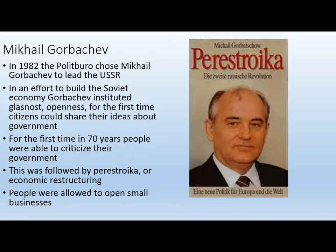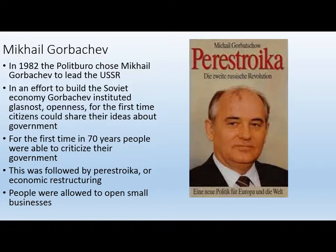Mikhail Gorbachev takes over and institutes a series of policy shifts. The first is glasnost, which means openness — doing the same thing that happened in Czechoslovakia in the 1960s. It allows people some freedom of speech: they can share their ideas and complaints. For the first time in about seventy years, Soviet citizens are able to criticize their government. Second, Gorbachev institutes perestroika, which is economic restructuring. People are allowed to open their own small businesses, government-owned factories can pay people more based on performance, and people are allowed to sell things — so some capitalism is slowly drifting into the Soviet Union.